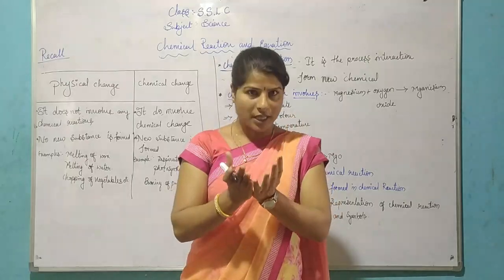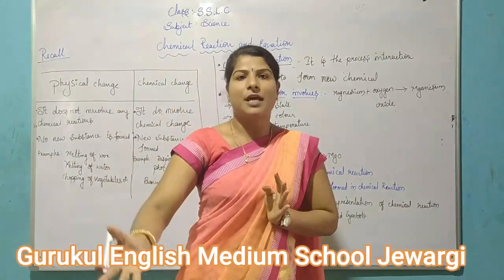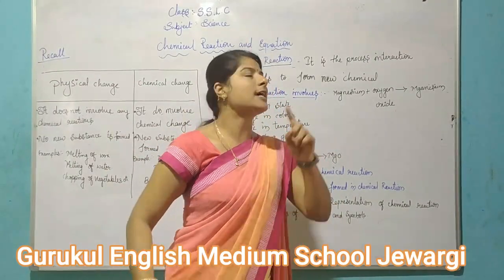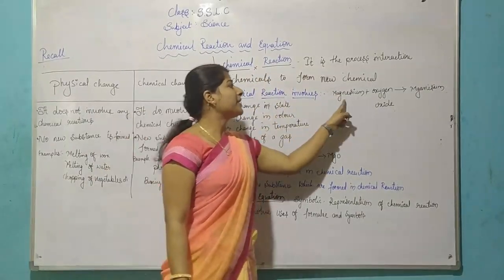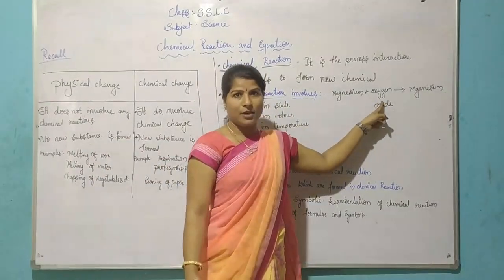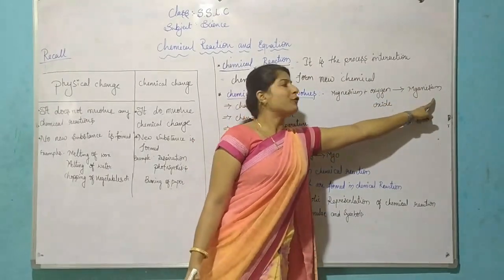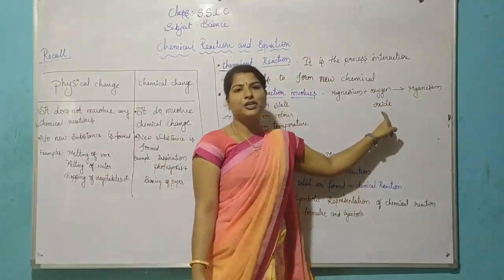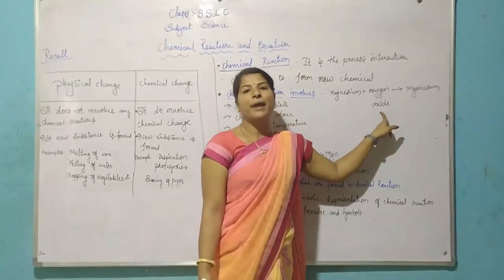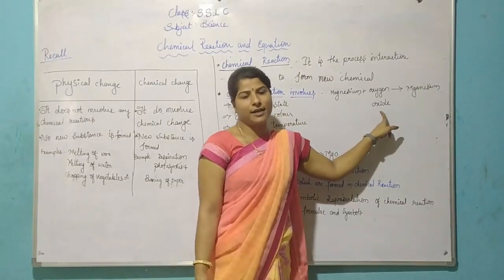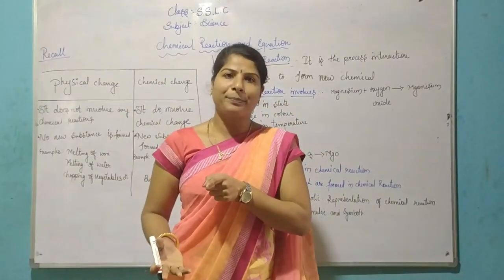One or two substances combined to form new substances — that is also called a chemical reaction. For example, when magnesium is burned in oxygen, they will form magnesium oxide. After the chemical reaction, what will happen?